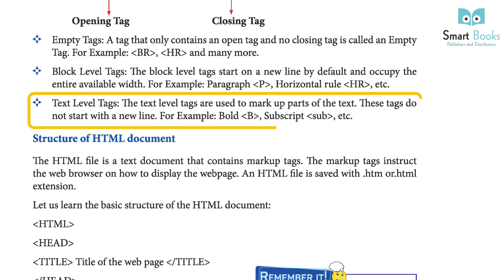Text level tags: Text level tags are used to mark up parts of the text. These tags do not start on a new line. For example, bold (b), subscript (sub), etc.